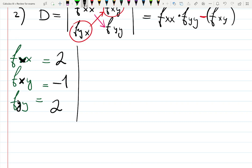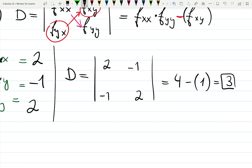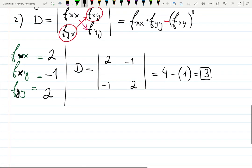So 2, minus 1, and 2. D will be f_xx is 2, f_yy is 2, minus 1 and minus 1. Cross product, which is 4. Don't forget negative sign. Minus. Minus 1 times minus 1, which is 1. So it's going to be 3. Number is not important. The sign of this number is important.